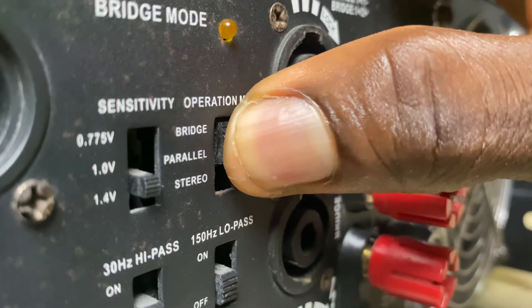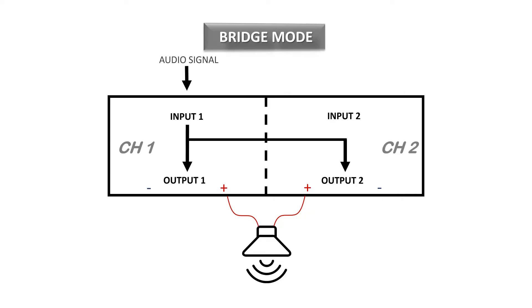The third mode of operation is bridge mode. In this mode, the power amplifier combines the output of both channels to drive a much larger load than either channel can handle on its own. The input of channel 1 is connected to the signal source, while the input of channel 2 is not connected. The output is connected from the positive terminals of both channels, or as specified in the amplifier's owner's manual. This mode requires special cabling, especially if you're using the Speakon connector.